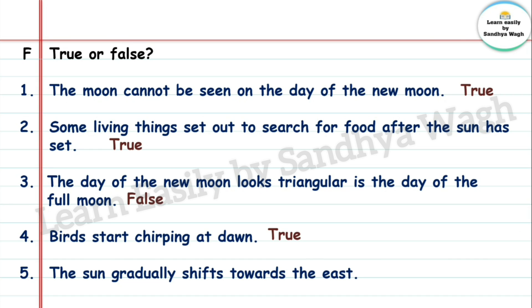5. The sun gradually shifts towards the east — False. The sun gradually shifts towards the west, not east. So this statement is false.